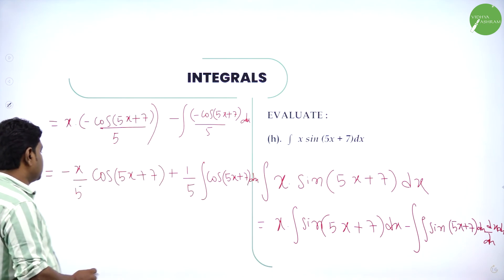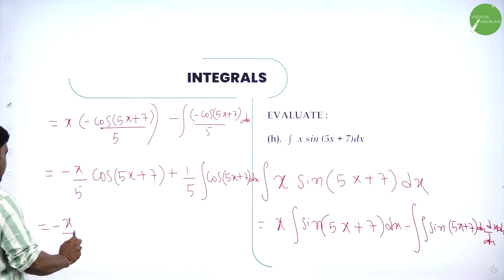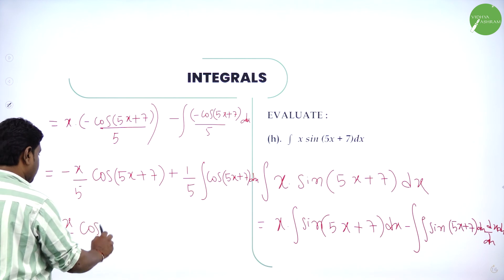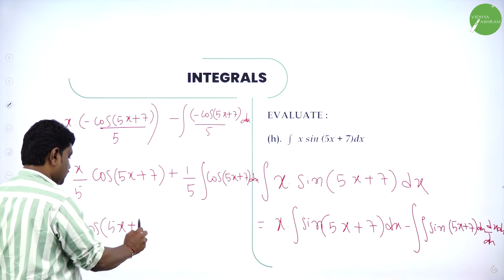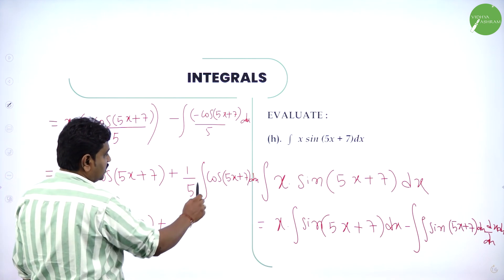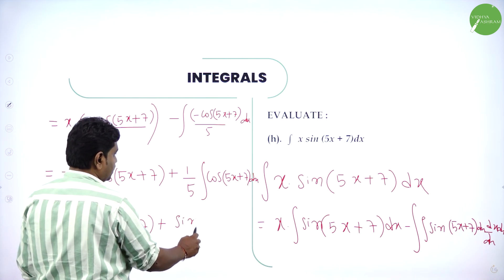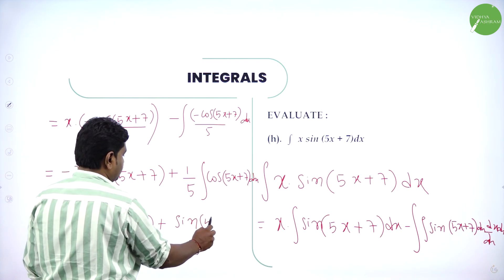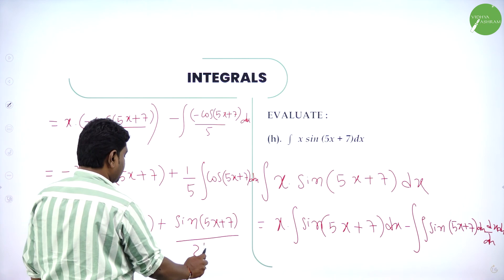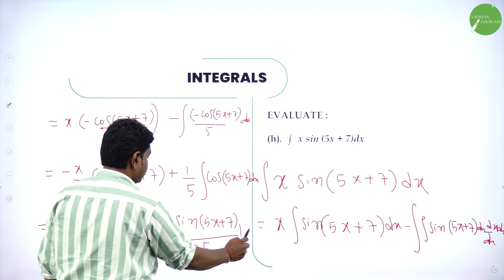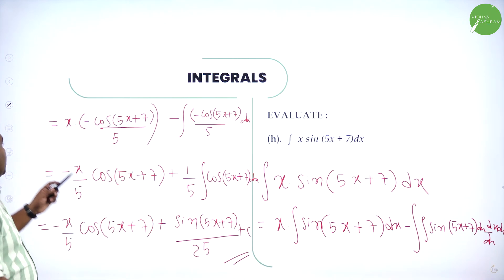Simplify: integration of sin(5x+7) is minus cos(5x+7)/5. So: minus x/5·cos(5x+7) plus integration of cos(5x+7)/5 dx, which gives sin(5x+7)/25 plus c.